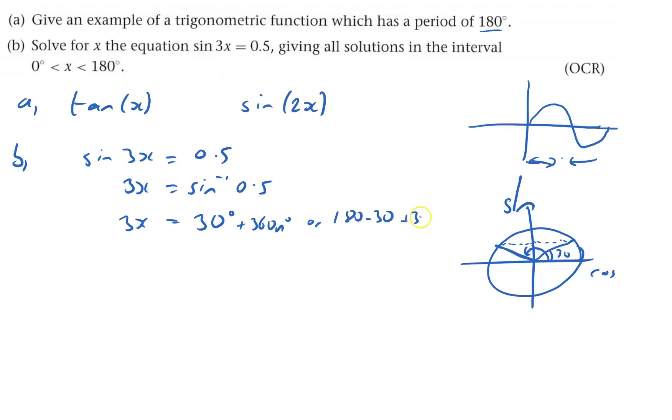So add 360n, because n could be 1, and just add 360, or it could be 2, in which case you add 720, or it could be 3, etc.